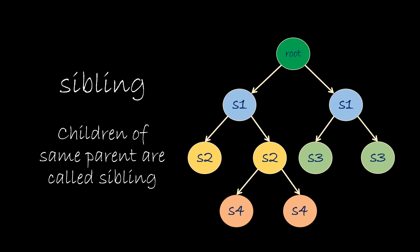Siblings are the children that have same parent. It is similar to the relation you share with your brother and sister. In the diagram, you can see the siblings are marked in the same color.